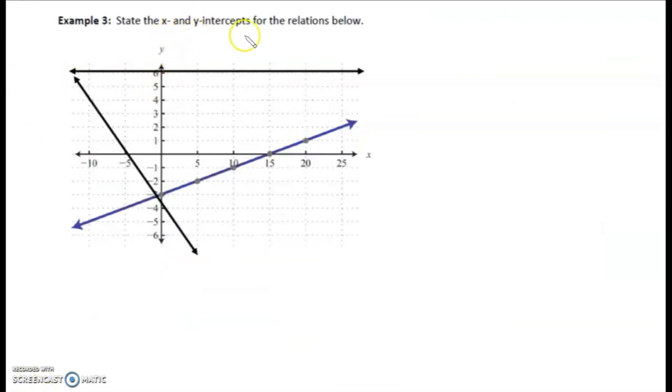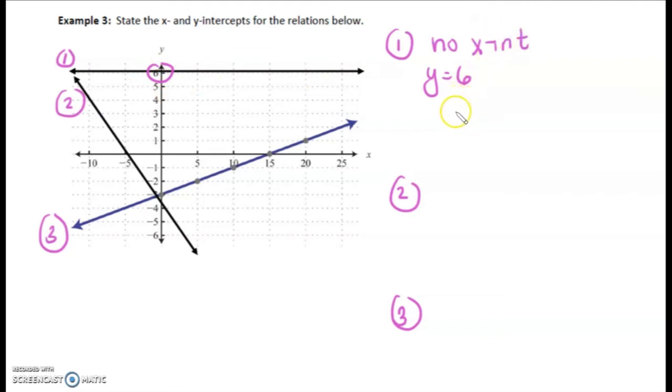Example 3, we're going to state the x and y intercepts for these three relations. So let's just call this equation 1, equation 2, and equation 3, or line 1, line 2, and line 3. We'll break this down. Line 1 is a horizontal line. It goes through y equals 6. No x intercepts. Equation 2, the x intercept would be negative 5, and the y intercept is going to be negative 3 and a half.